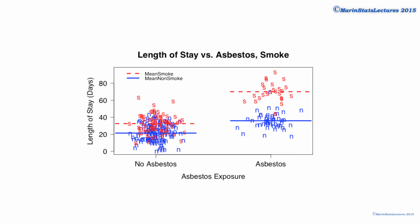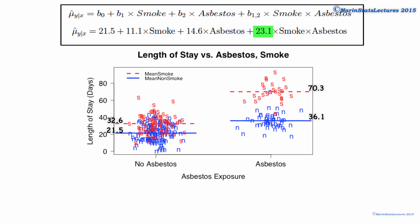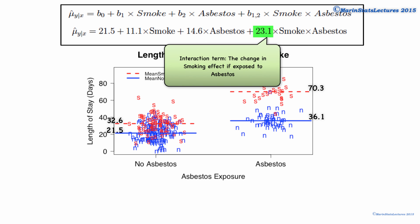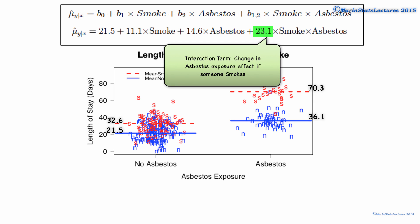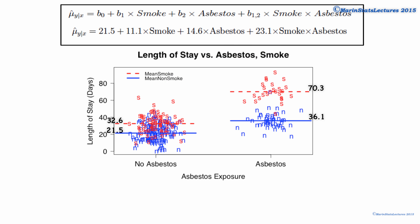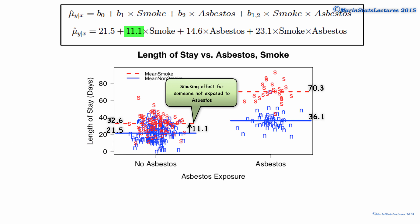Let's take a look at this numerically. Here we've added in the mean for each of these four groups. Suppose that the fitted regression model is as shown here. Recall that the smoking indicator equals 1 if they smoke, and the asbestos exposure indicator equals 1 if they've been exposed. The 23.1 is the interaction term. We can think of this as capturing the change in the smoking effect if someone has been exposed to asbestos, or as the change in the asbestos exposure effect if someone smokes. The intercept term of 21.5 tells us the mean length of stay for the reference group — that is, for the non-smokers who are not exposed to asbestos. The 11.1 is the smoking effect for someone not exposed to asbestos.